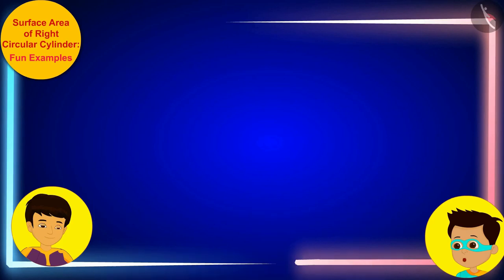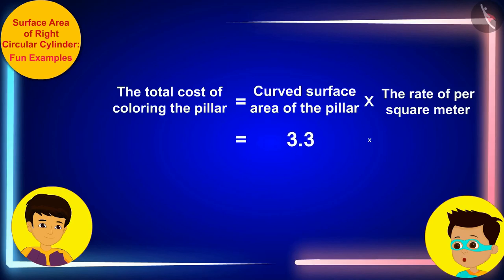Yes, Manas, and if we multiply this by per square meter rate of coloring, 200 rupees, in this way, you will find that 660 rupees would be the cost to paint this cylindrical pillar.